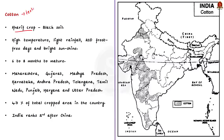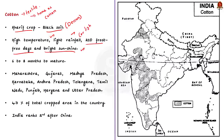India is believed to be the original home of the cotton plant. Cotton grows well in the black cotton soil of the Deccan plateau. It requires high temperature, light rainfall or light irrigation, 210 frost-free days, and bright sunshine for its growth. Cotton requires 6 to 8 months to mature. The major cotton-producing states in India are Maharashtra, Gujarat, Madhya Pradesh, Karnataka, Andhra Pradesh, Telangana, Tamil Nadu, Punjab, Haryana and Uttar Pradesh. Cotton occupies about 4.7% of total cropped area in the country.